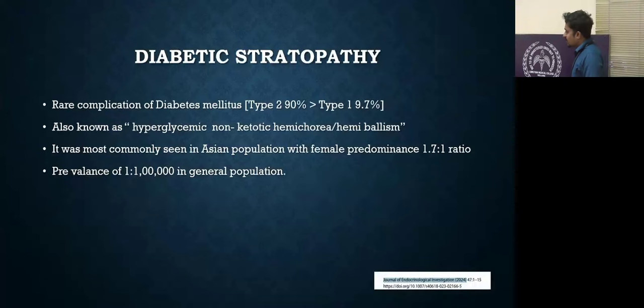Diabetic striatopathy is a very rare complication of diabetes, mostly associated with type 2 compared to type 1. It is also known as hyperglycemic non-ketotic hemichorea or hemiballismus. It is most commonly seen in the Asian population with female prevalence, mainly because it was underdiagnosed in males. Its prevalence was 1 in 1 lakh.